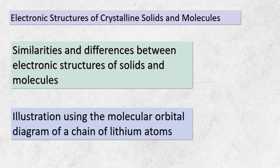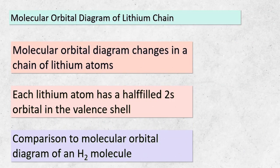Today, we're delving into the fascinating realm of electronic structures within crystalline solids and molecules. In this journey, we'll uncover both the commonalities and distinctions that exist. To truly grasp the concepts at hand, let's focus on the molecular orbital diagram of a chain of lithium atoms. As we increase the length of the chain, we witness intriguing transformations. Each lithium atom contributes a half-filled 2s orbital in its valence shell, setting the stage for remarkable interactions.